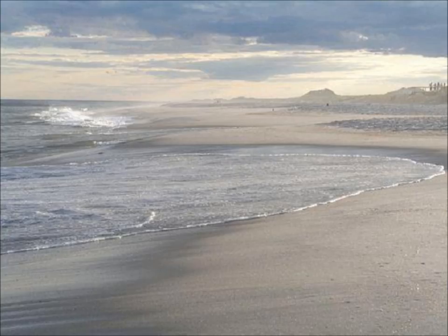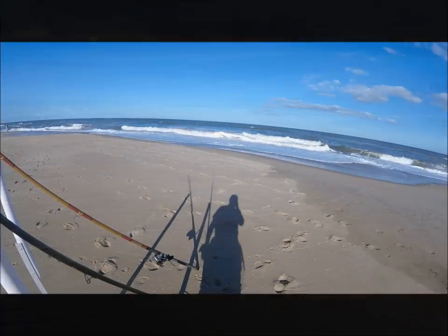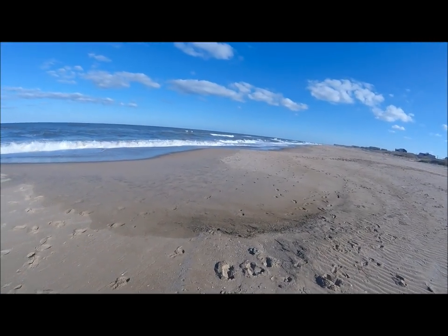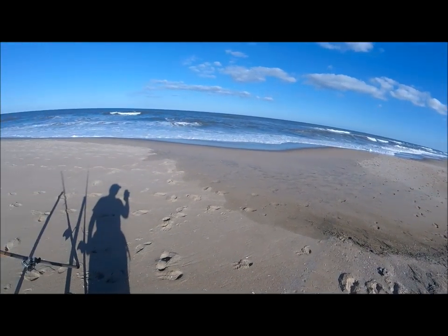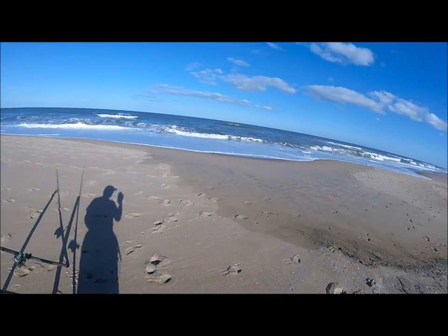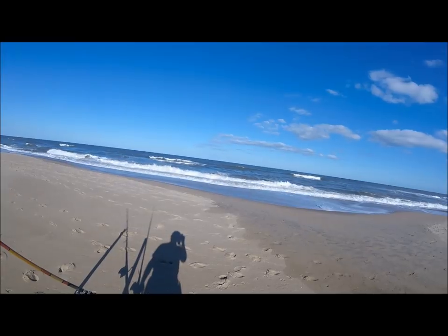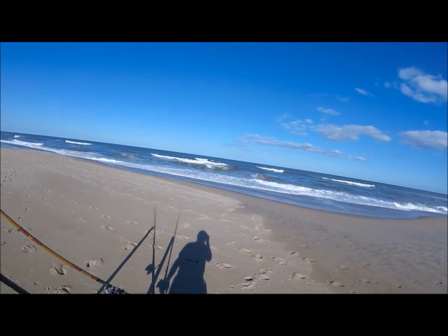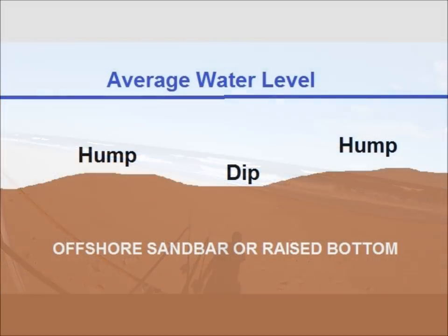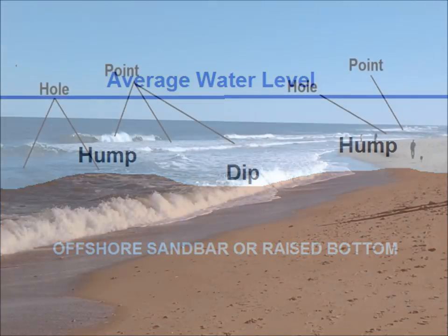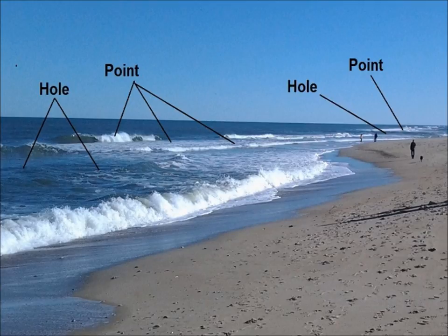I've mentioned these before in other videos, but I've never really explained them in detail. At first glance, the shoreline itself has a running series of humps and dips. Frequently, there is a minor sandbar or raised bottom offshore that runs parallel to the shoreline, typically within 100 yards out or so, and there is usually not much of a trough, so the water is relatively shallow. What you don't see is that the offshore bar or raised bottom also has humps and dips, many times in almost direct proportion to those on the shoreline. These humps and dips, in conjunction with those on the shoreline, determine how the water flows and where the sand stirred up by wave and tidal action winds up. The resulting structures are basically smaller, more subtle versions of points and holes.